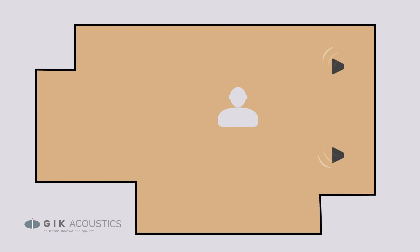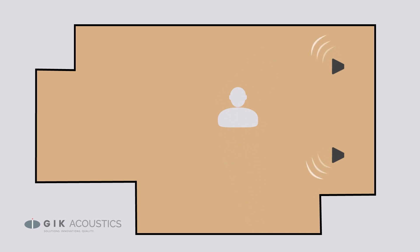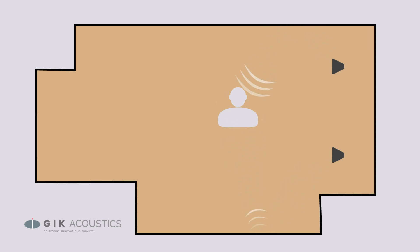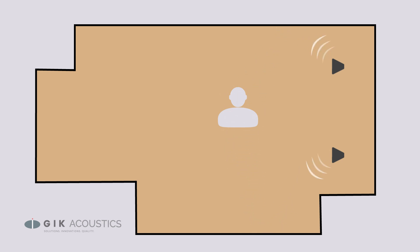The sound reflecting off your side walls is going to combine with the original sound, so if one set of reflections is closer than the other, then the reflected sound will arrive at the listening position out of sync, creating all kinds of distortion.